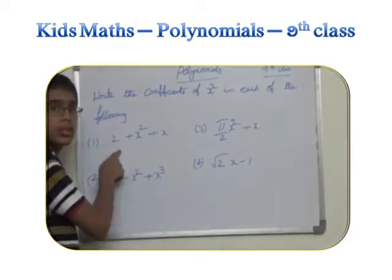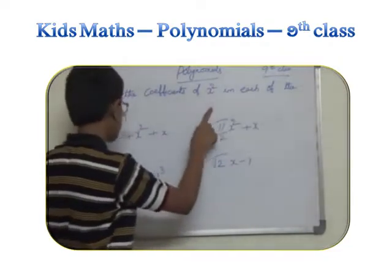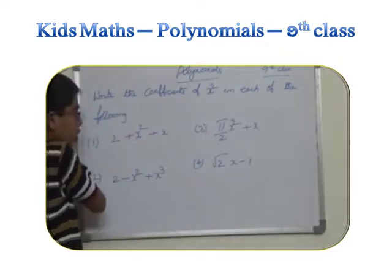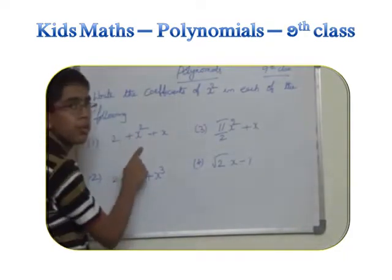So the first question is 2 plus x squared plus x. So we have the coefficient of x squared. A coefficient is the constant term of the polynomial.